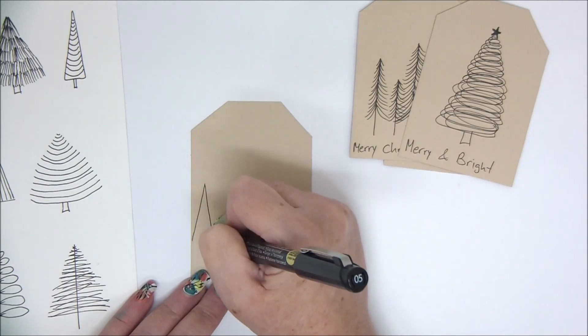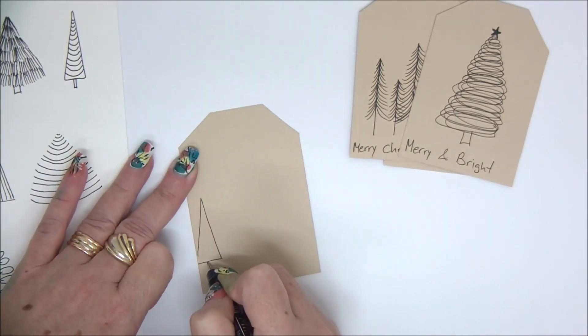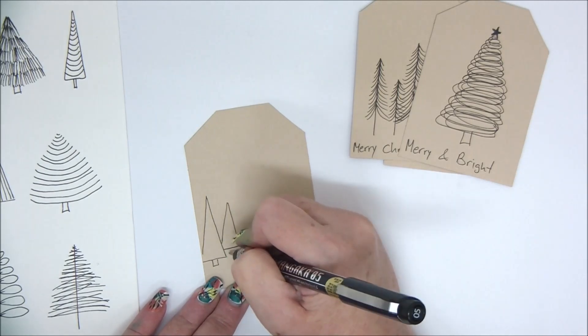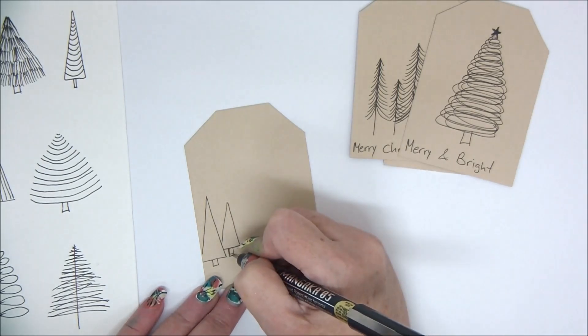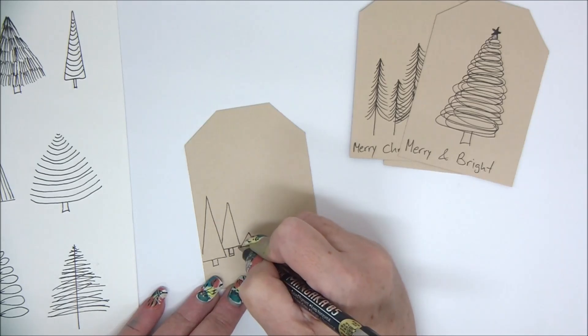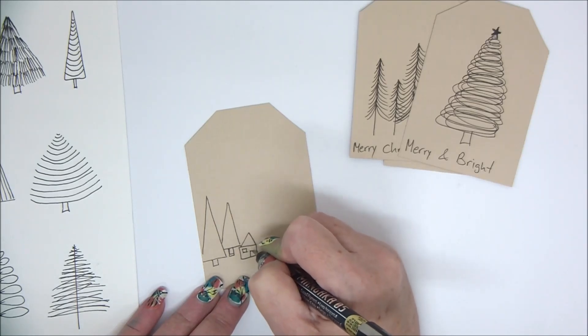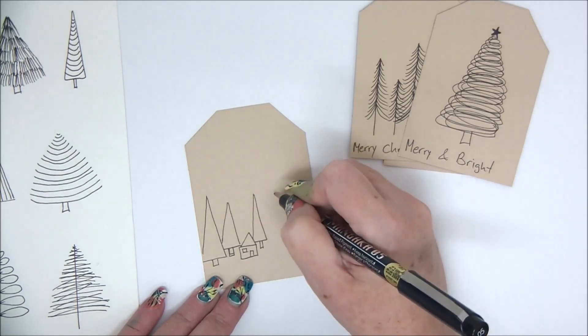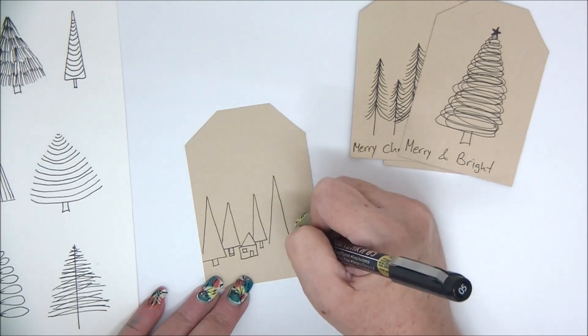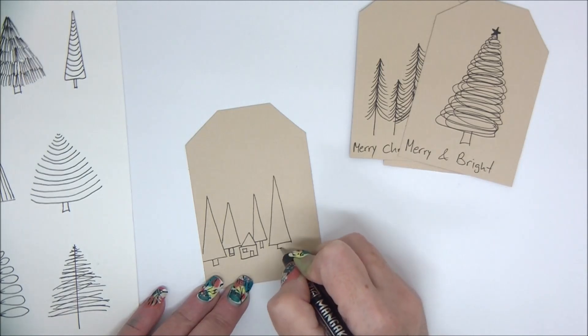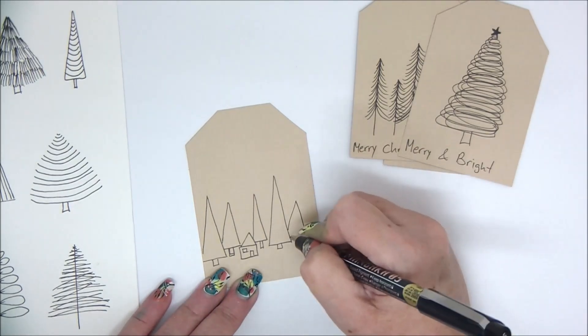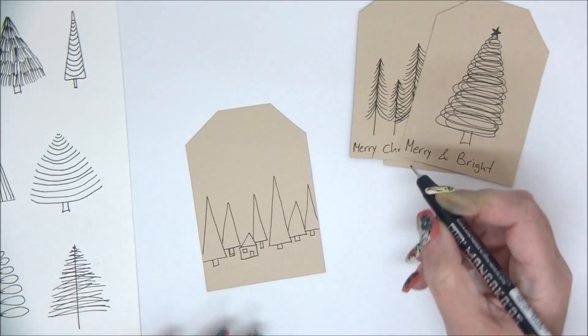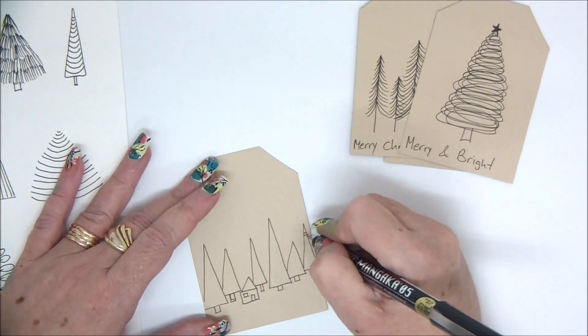For a last tag, again I'm going to make some trees, different size trees in a row, and a little house—like a sort of winter scene, a little winter scene. Of course these drawings are very basic, but it can still look really nice, especially if you need something for the last minute.